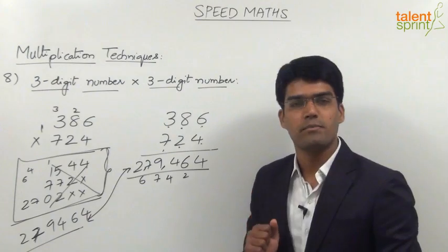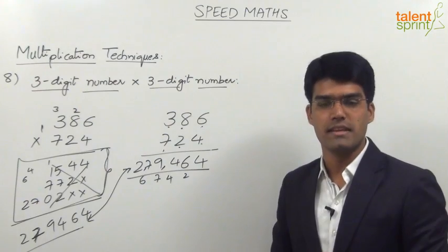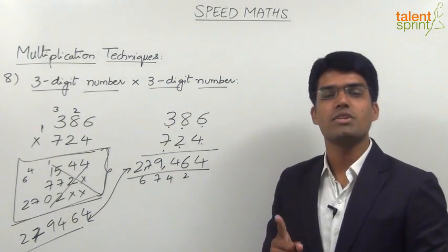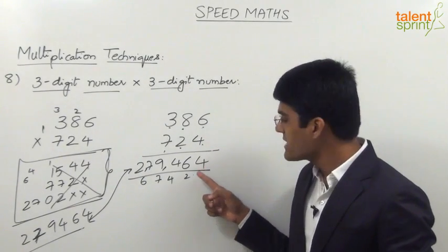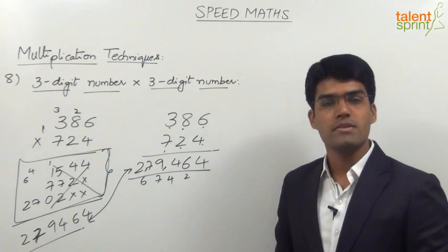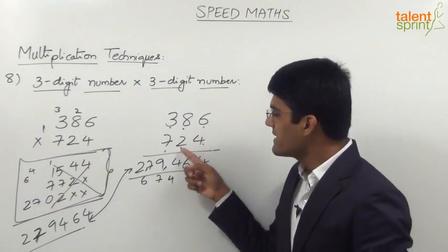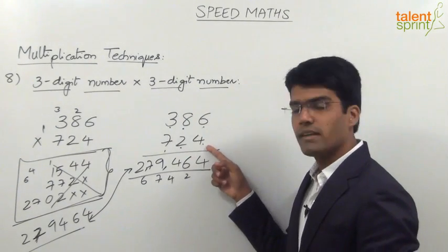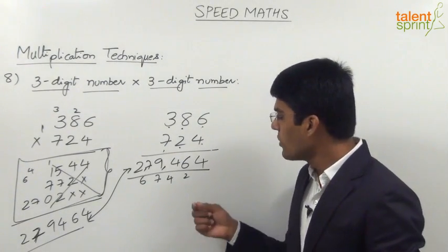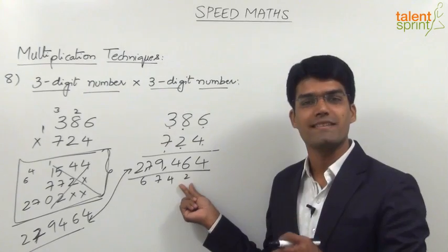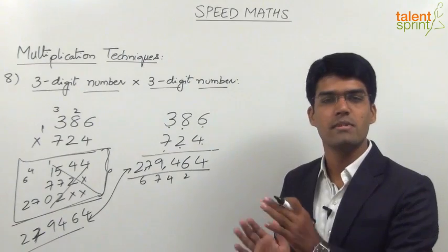Simply follow this five-step procedure whenever we have to multiply three-digit numbers. Step one: multiplication of units places — 6 into 4 is 24, write 4 in the answer and carry 2. Step two: cross multiplication of units place with tens place — 8 into 4 is 32, 6 into 2 is 12; 32 plus 12 is 44, plus carry 2 is 46. Write 6 in the answer and carry 4.